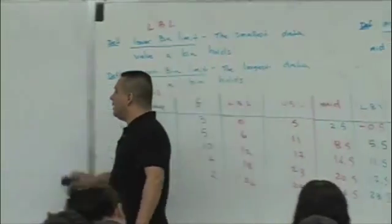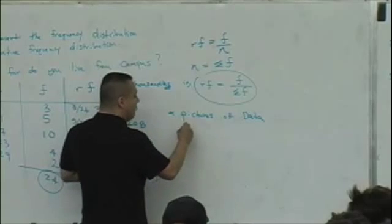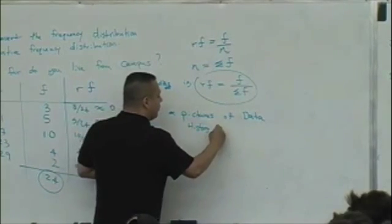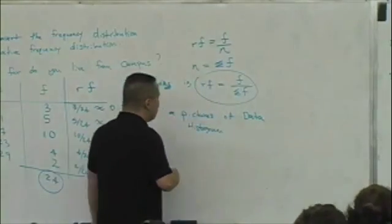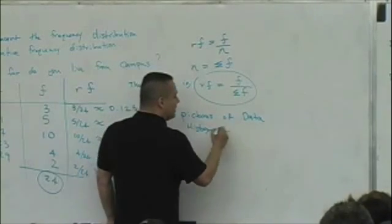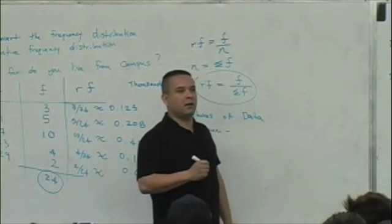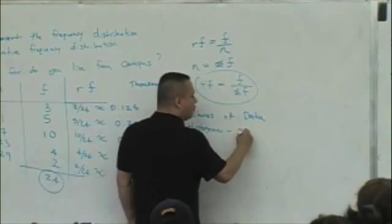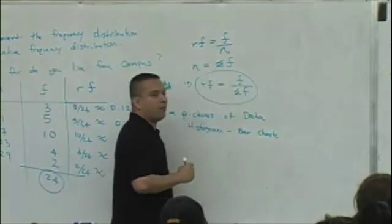There's various pictures of data. I'm not going to go through all of them in great detail because I'll have you read about some of them. We just don't have enough time to go over all these things in detail. A histogram. You guys know what that is? You guys ever see one before? They're around everywhere. That's known as a bar chart in a lot of circles.